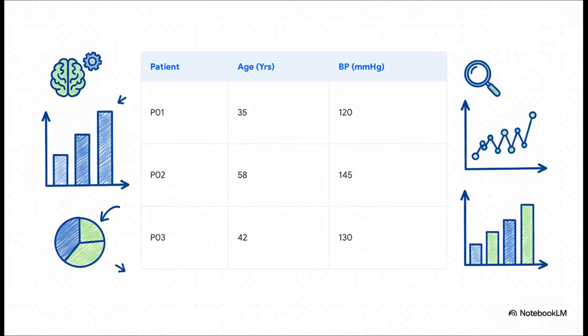And when you plot all your patients like this, you can start to see if a pattern shows up. Like, do the dots tend to go up and to the right? That might suggest a connection between getting older and having higher blood pressure.